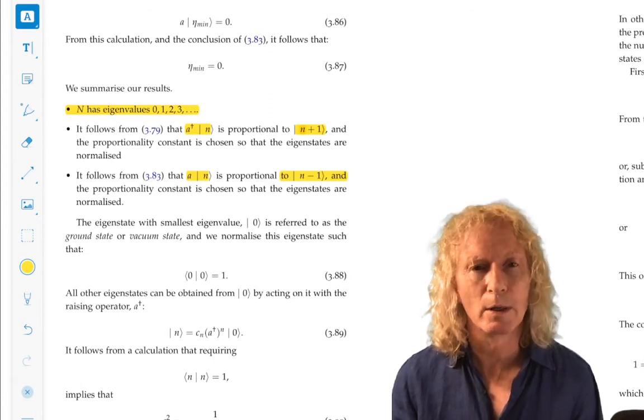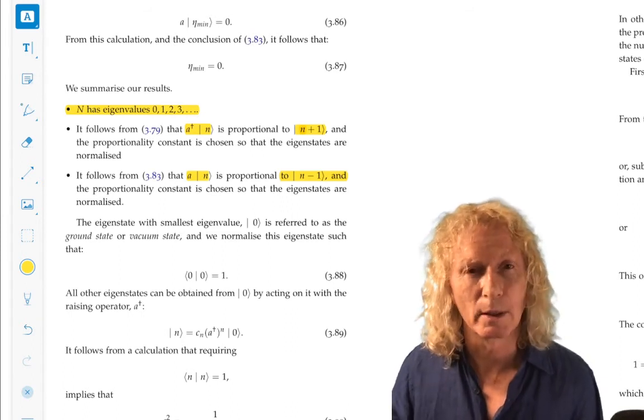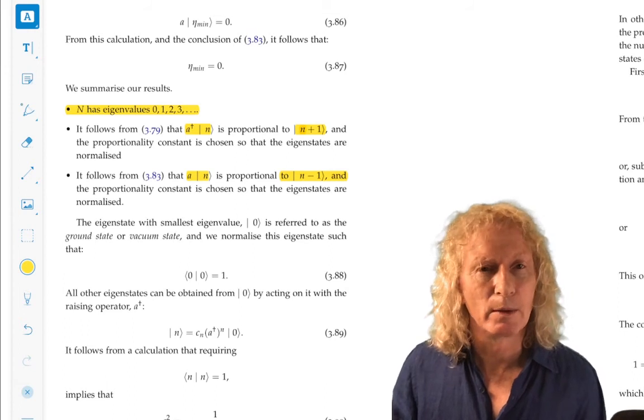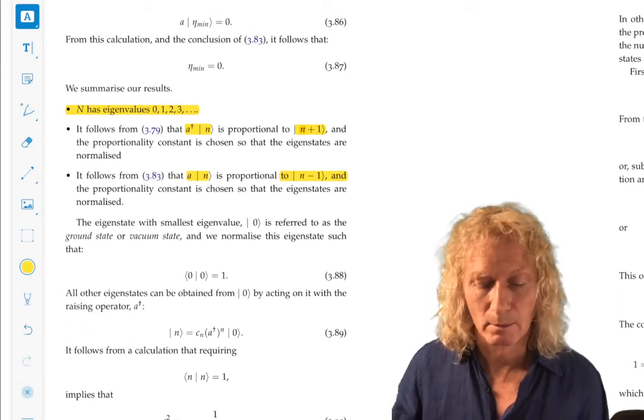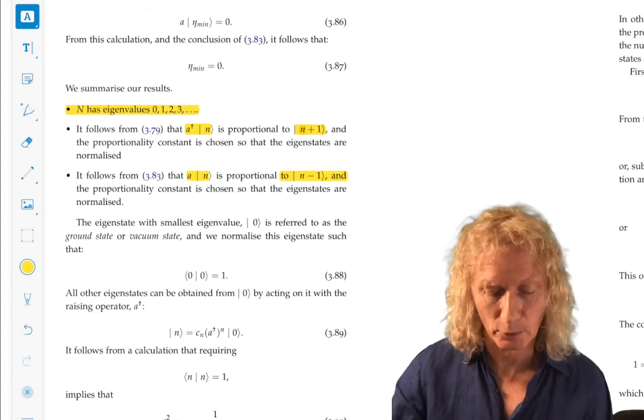So n plus a half h-bar omega. We increment by one, two, three, and add a half to each. But the classical harmonic oscillator, the energy varied continuously from zero to infinity. A quantum harmonic oscillator goes to infinity, but just in these discrete jumps.